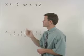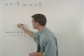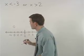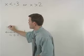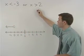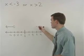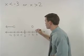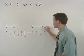For x is less than negative three, we have an open dot just above negative three and an arrow going to the left. For x is greater than two, we have an open dot just above two and an arrow going to the right.